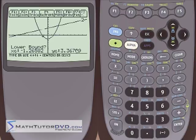And then now it's asking us where is the lower bound? So you need to scroll just to the left of where this intersection point is. It could be anywhere, but you need to be on the left hand side of it. So we'll hit enter.